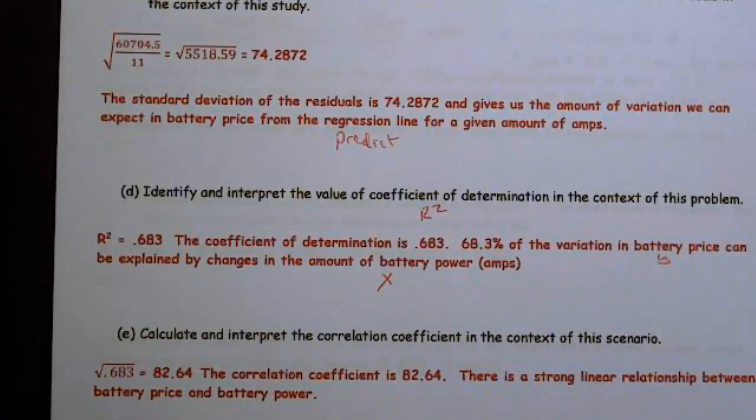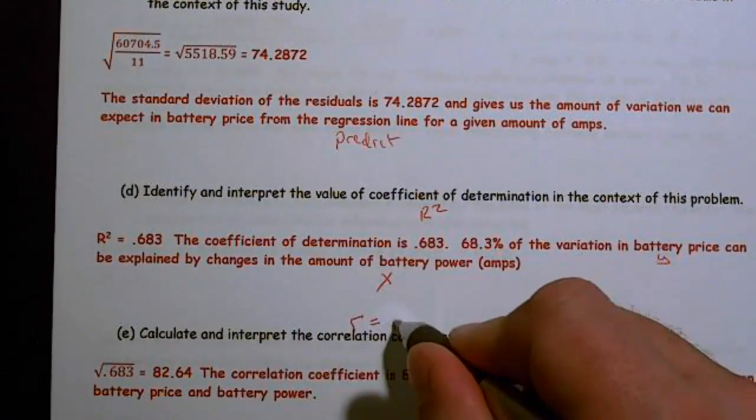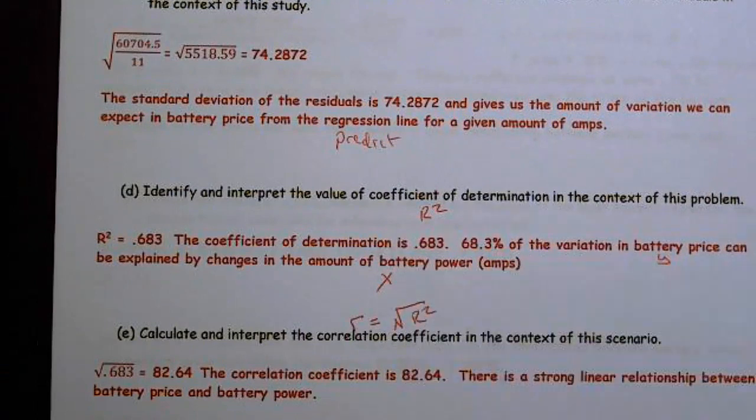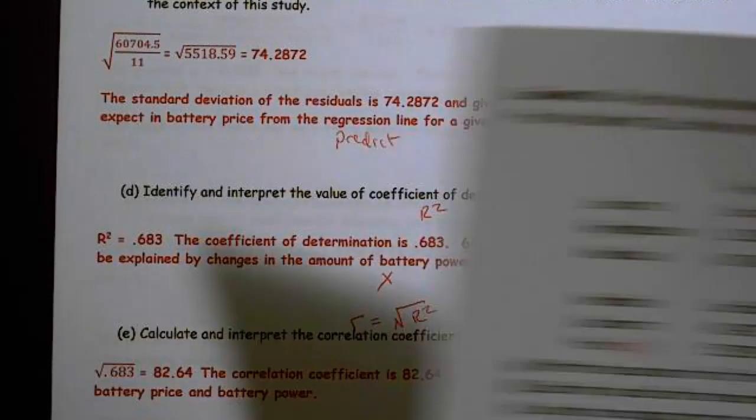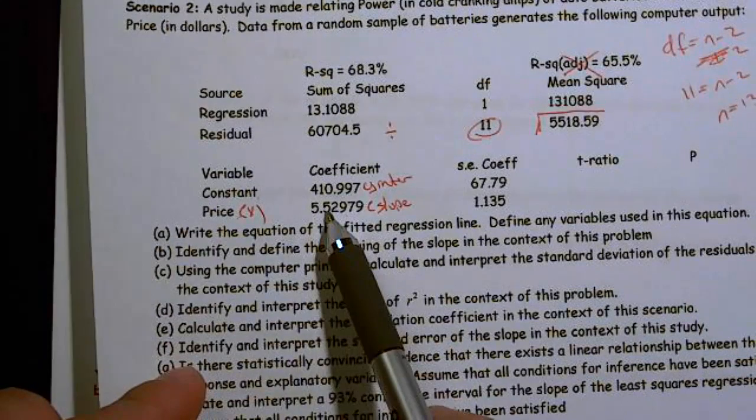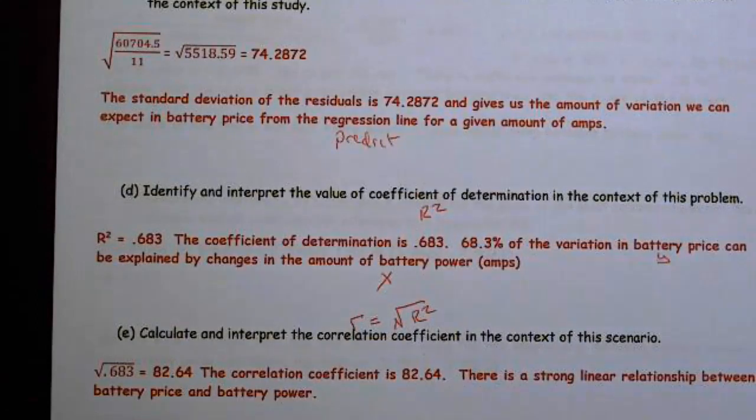Calculate and interpret the correlation coefficient. Well, that's just R. And R equals the square root of R-squared. So the square root of 0.683, 82.64. Now, I need to check one other thing. My slope. Well, in this case, my slope is positive, so I'm good to go. If it had been negative, then I would have a negative relationship.